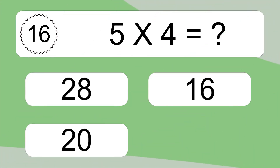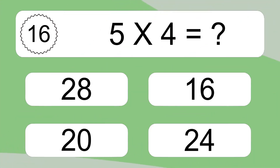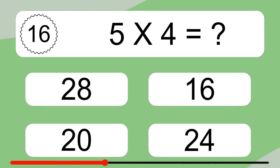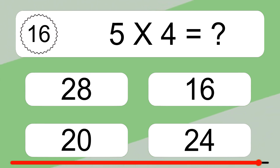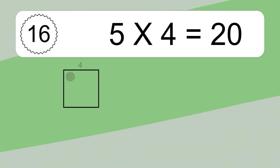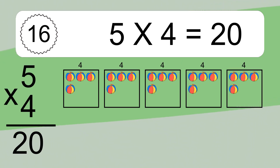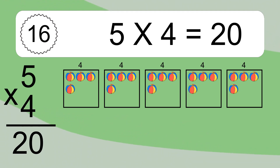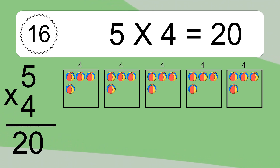5 times 4 equals what? 5 times 4 equals 20. We have 5 boxes, and each box has 4 colorful balls inside. If you count all the balls in all the boxes together, you will have 5 times 4 balls. This equals 20 balls.